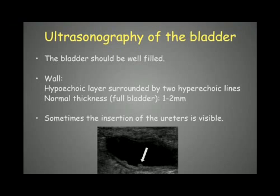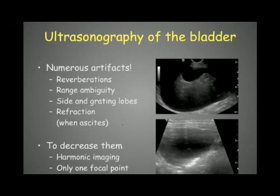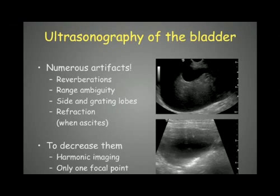Sometimes we can see the insertions of the ureters into the wall of the bladder, at the level of the dorsal wall at the trigone of the bladder. We have to be careful when interpreting an ultrasonography of the bladder because there are a lot of artifacts created at the level of the bladder. For example, we can see reverberation artifacts due to the reverberation of the ultrasound beam on the abdominal wall and on the ventral wall of the bladder.